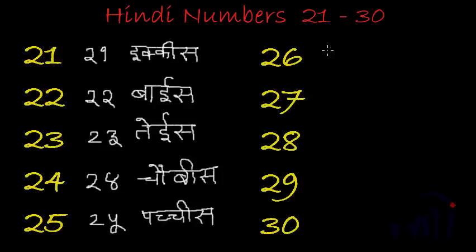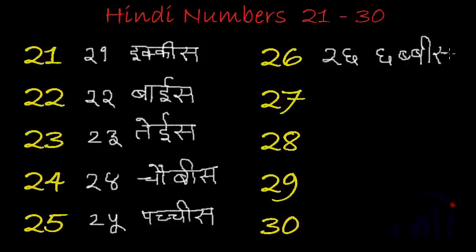26 is called chabbis and it is written as: do a, cha — chabbis. 27 is called sataais — do aar saath — sataais.